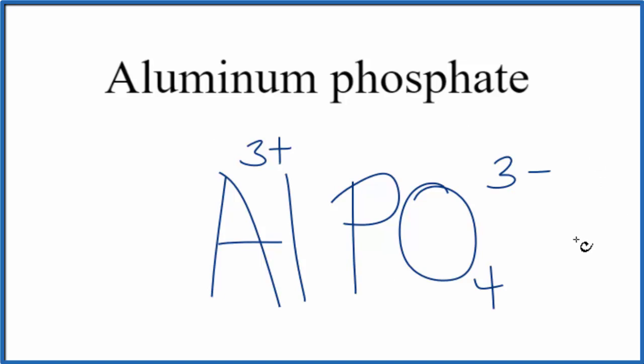So this is the formula for aluminum phosphate, Al-P-O-4. And this is Dr. B. Thanks for watching.